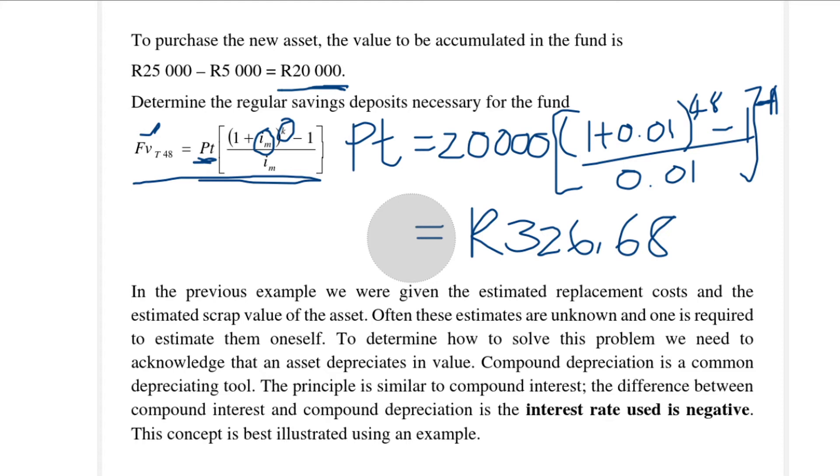Often these values are not known and we need to estimate them ourselves. We will use a method called compound depreciation to estimate the future value of an asset. Compound depreciation works exactly the same as compound interest; the only difference is that the rate will now be a negative rate and not a positive rate. Let's look at the next example to illustrate that.